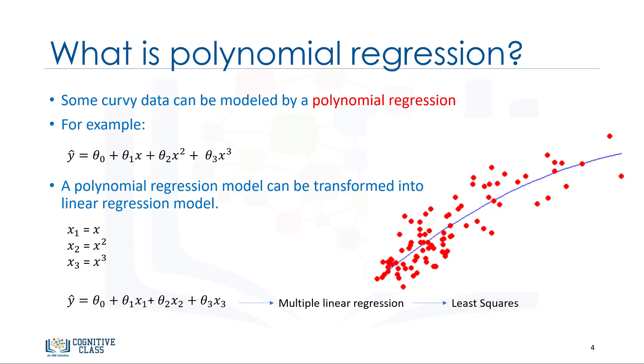this polynomial regression is considered to be a special case of traditional multiple linear regression. So, you can use the same mechanism as linear regression to solve such a problem. Therefore, polynomial regression models can fit using the model of least squares. Least squares is a method for estimating the unknown parameters in a linear regression model by minimizing the sum of the squares of the differences between the observed dependent variable in the given dataset and those predicted by the linear function.